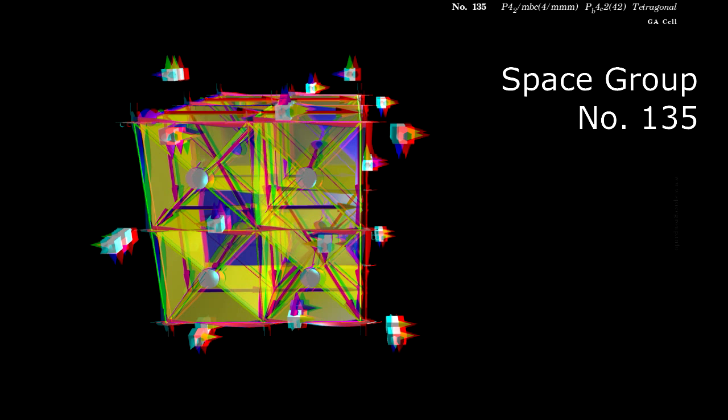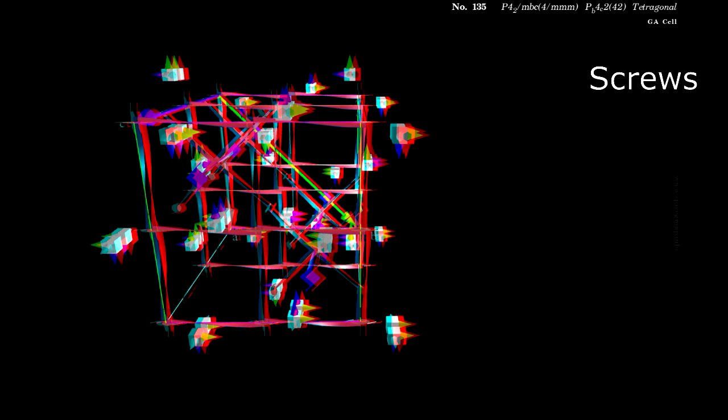In this video we will discuss the screws of space group number 135. This type of symmetry operation consists of one rotation followed by a translation.